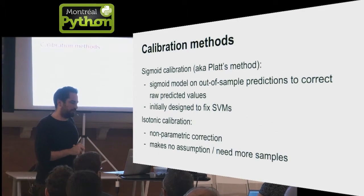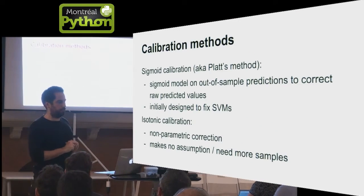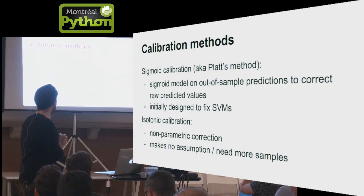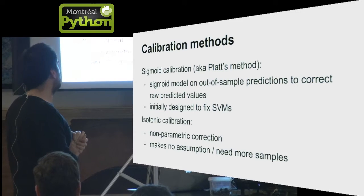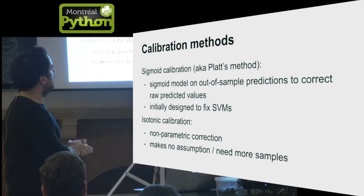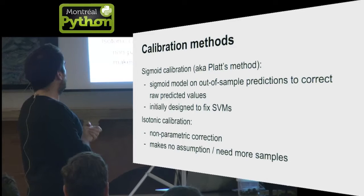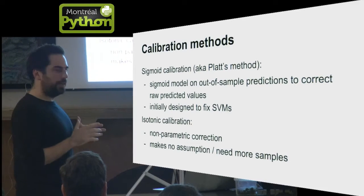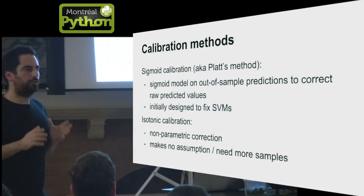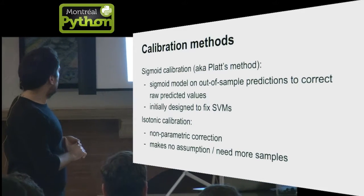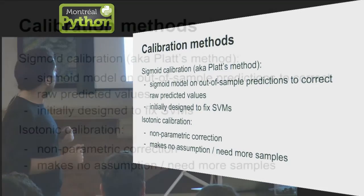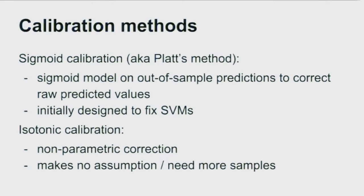It's possible once you have identified that your model is not well calibrated to use different calibration methods. One is called sigmoid calibration, the Platt method. It's a parametric method, so it's good when you don't have a lot of data, and it's specifically designed to address the issue of the support vector machine, the pessimistic models. Isotonic calibration is a second method that doesn't make that assumption, but on the other hand requires more data to calibrate the model correctly.